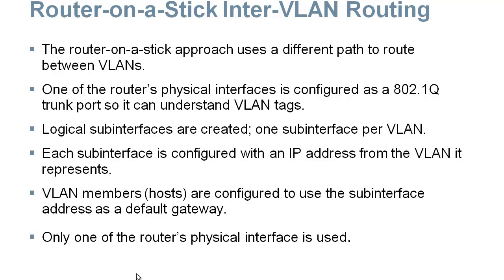Today, what we typically do is router on a stick. Router on a stick means we have one interface that routes between all the different VLANs. We create sub-interfaces on that router — so this physical interface FA00 is going to have FA00.1, .2, .3, and .4. Then .1 routes traffic for VLAN 1, .2 routes traffic for VLAN 2. We take the one physical interface and split it into a whole bunch of virtual interfaces, and each virtual interface is in charge of one VLAN.